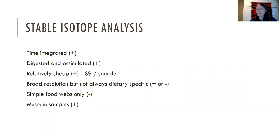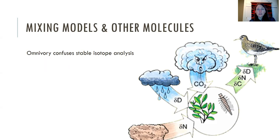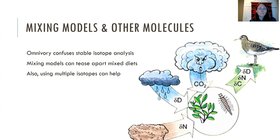So it's not always super specific answers, and it works best in pretty simple food webs. So it does get complex in omnivorous ecosystems or omnivorous systems. The other thing that's really cool is you can measure these things on museum specimens, so you can look at changes going back through time using museum collections. Omnivory confuses stable isotope analysis, but we can also use lots of different stable isotopes to get at questions that are more complicated. So mixing models can help tease apart mixed diets—they are really messy and I'm not going to go into how they work explicitly—but you can also use multiple isotopes to help answer your question. So you can look at nitrogen, you can look at carbon, you can look at hydrogen and oxygen, and all of these things can help answer your questions.